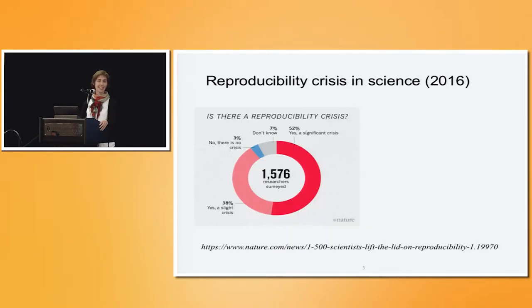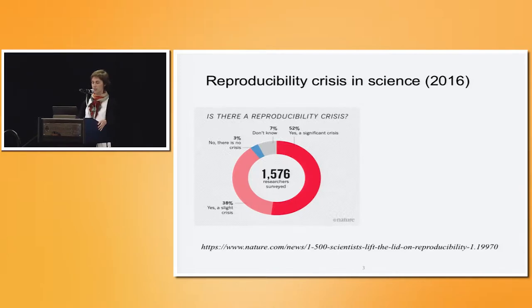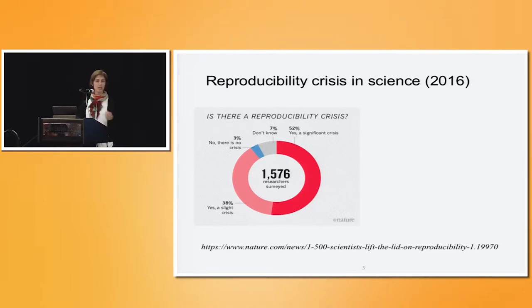In 2016, the well-known journal Nature put out a survey of 1,500 scientists asking them whether there was a reproducibility crisis. 52% said yes, there's a significant crisis, and 35% said yes, there's a slight crisis. A few didn't know, and only 3% said no crisis, no need to worry about this. So there's clearly some concern across different fields.